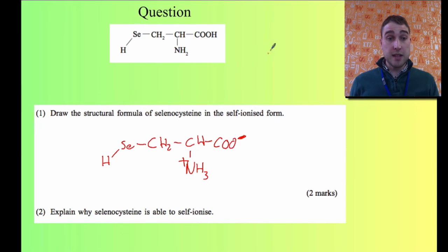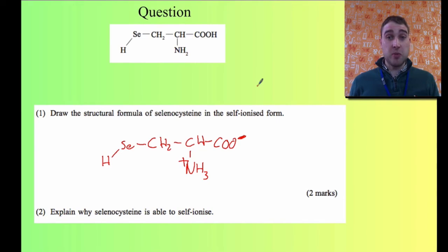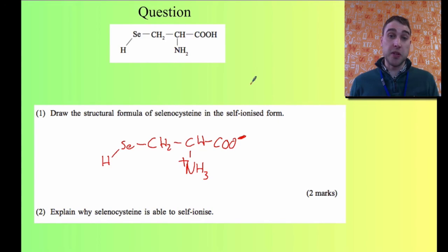Then it says: explain why selenocysteine is able to self-ionize. Selenocysteine is able to self-ionize because it contains a carboxyl group which can donate a proton, and it contains an amino group which can accept a proton. So it has a basic amino group and an acidic carboxyl group. The proton is donated from the carboxyl group to the amino group — and that's where the self-ionization comes from.